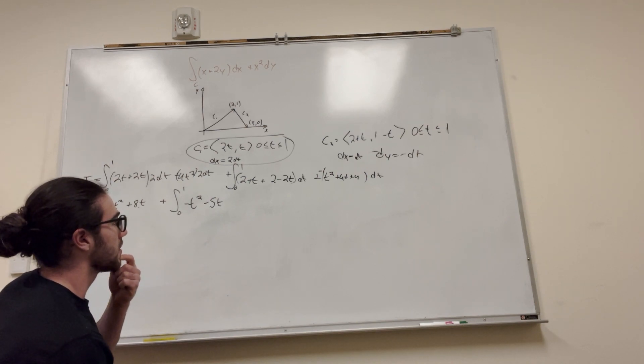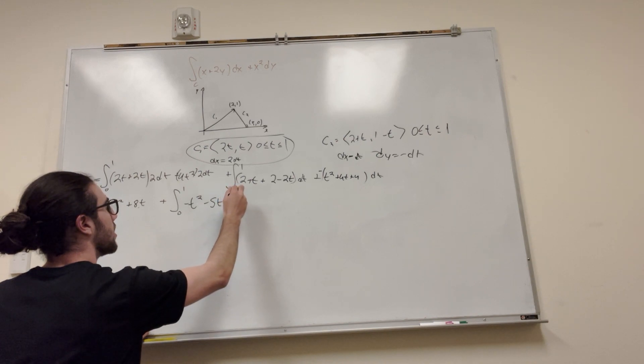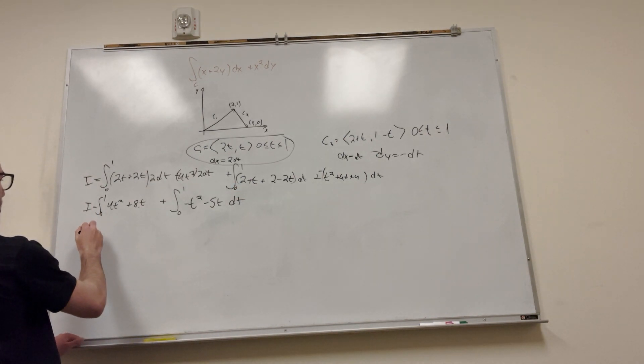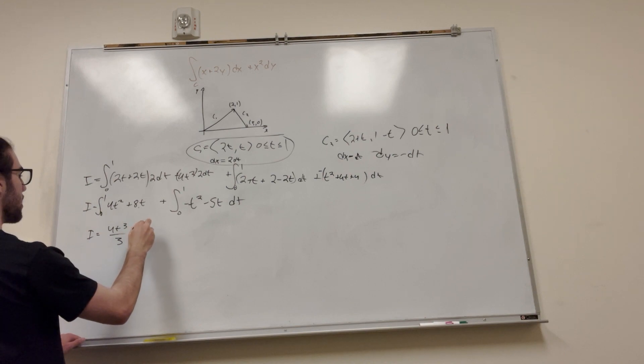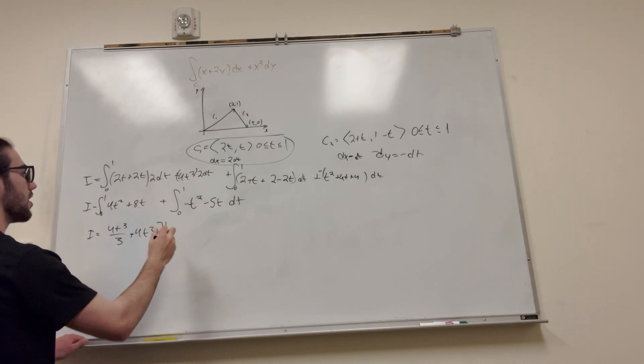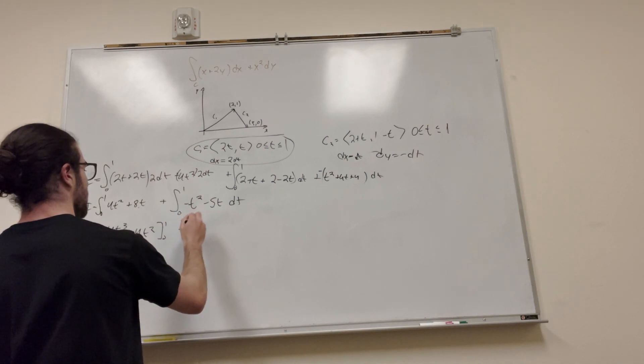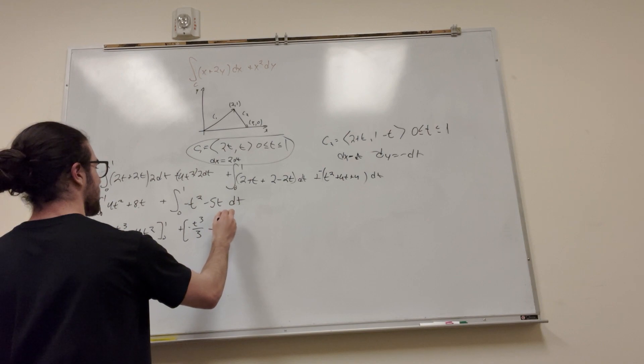And then we have a -4 + 4, so those are going to cancel out. All right, there we have it. Now let's go ahead and integrate this. So this is going to become 4t³/3 + 4t² from 0 to 1. This is going to be -t³/3 - 5t²/2 from 0 to 1.